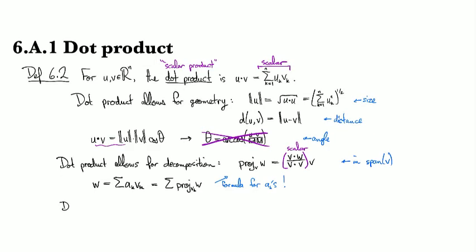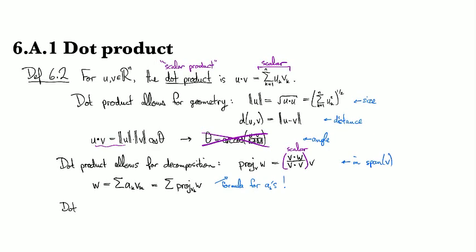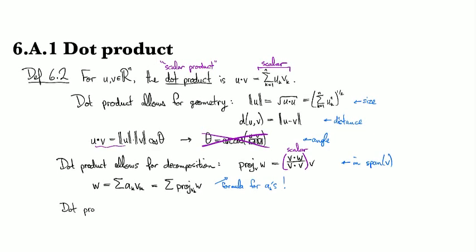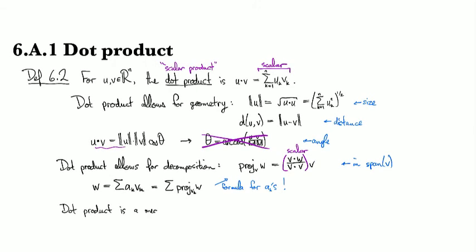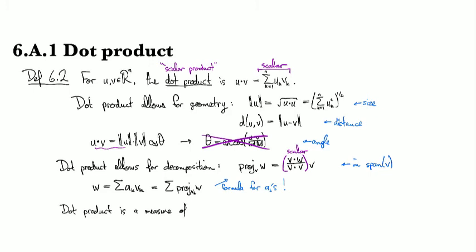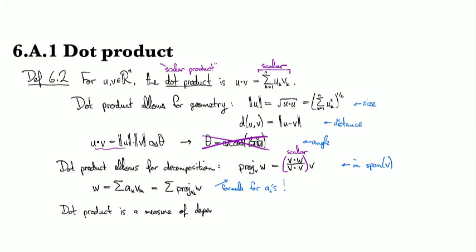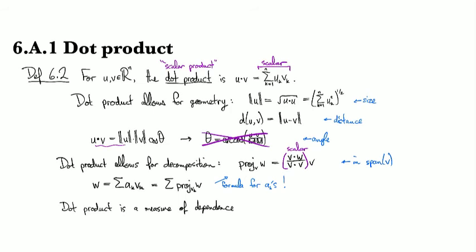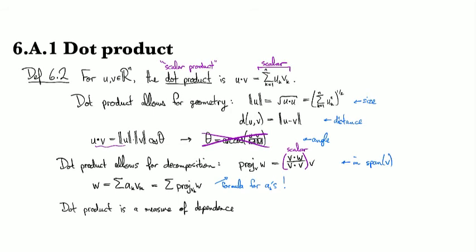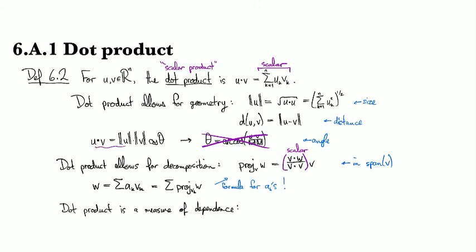So dot products also give us a measure of dependence. This is not so much a geometric way of thinking about things, but sort of it is. But you can also think of it in a probabilistic sense.